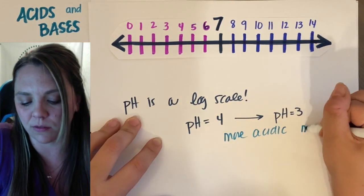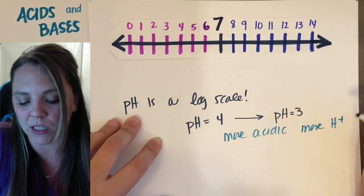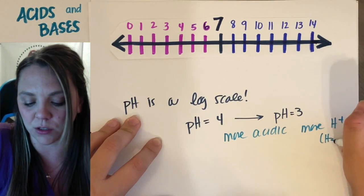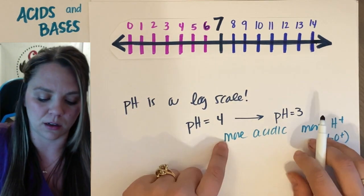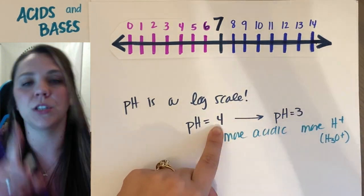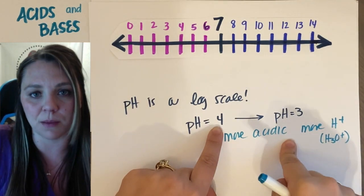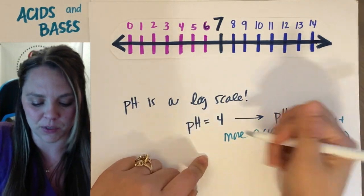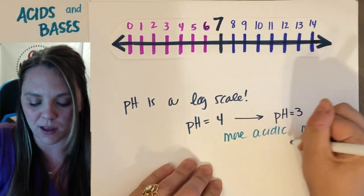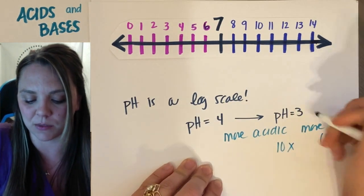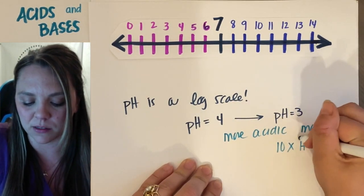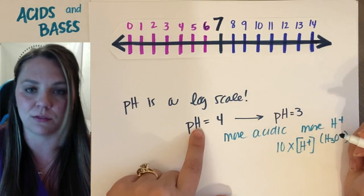So that means you have more H+, which really means you have more H3O+. But just going from 4 to 3, it's not changing by 1. I'm not changing the concentration by 1. I'm changing it by a factor of 10. So to go from 4 to 3, I would have now 10 times the H+ concentration that I did at 4.